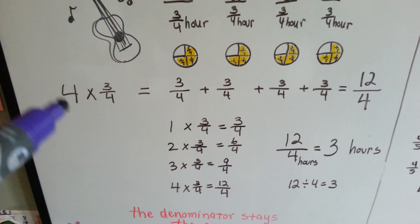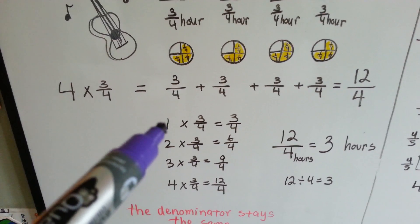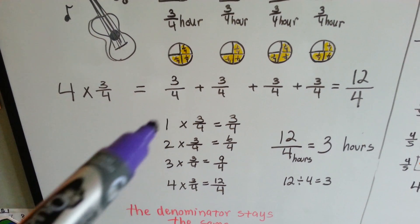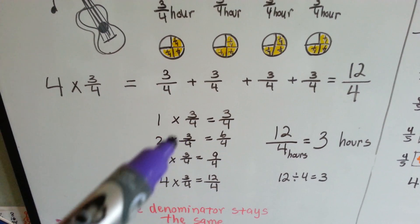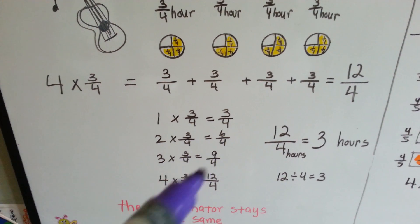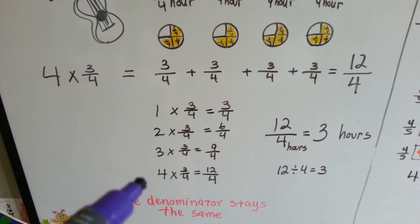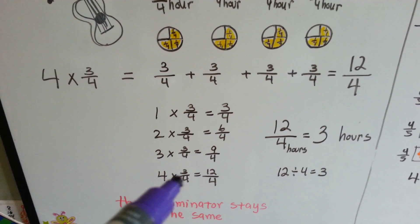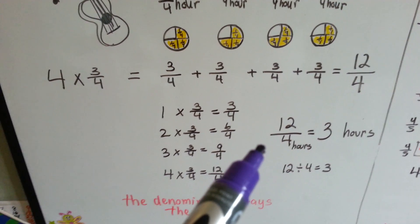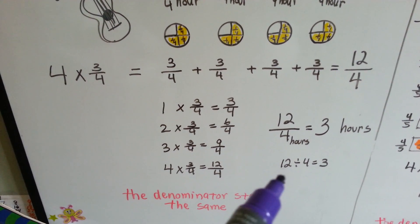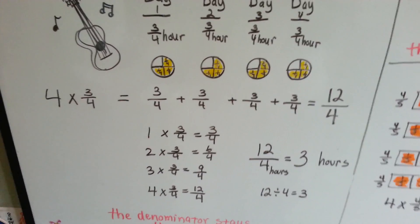Multiplying, we would do 4 times 3 fourths. Note that 1 times 3 fourths is 3 fourths — that's the identity property, where anything multiplied by 1 stays the same. We multiply the whole number times the numerator: 1 times 3 gives 3, and we keep the denominator 4. So 2 times 3 fourths is 6 fourths, 3 times 3 fourths is 9 fourths, and 4 times 3 fourths is 12 over 4. Now we simplify: 4 fits into 12 three times, so Tala will practice 3 hours before her concert.